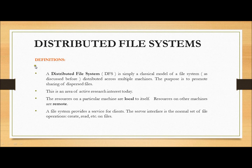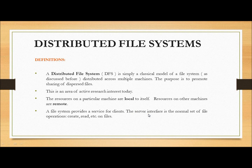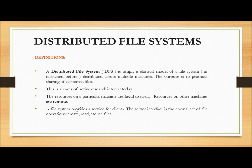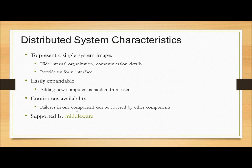Now, the definition of a distributed file system. A distributed file system is simply a classical model of a file system distributed across multiple machines. The purpose is to promote sharing of dispersed files. This is an area of active research interest today. Resources on a particular machine are local to itself, while resources on other machines are remote. A file system provides a service for clients via the normal set of file operations: create, read, etc.